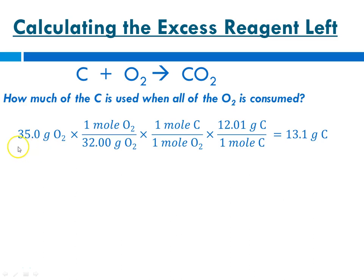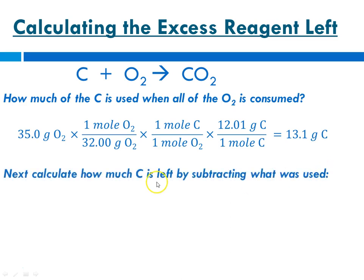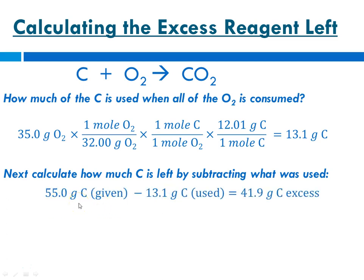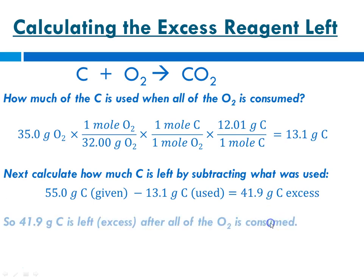So when we use up all of the oxygen, 13.1 grams of carbon will also be used. We can calculate how much carbon is left by subtracting from what we started with: we began with 55 grams of carbon and used 13.1 grams, which means 41.9 grams of carbon are excess — left over after all of the oxygen is consumed.